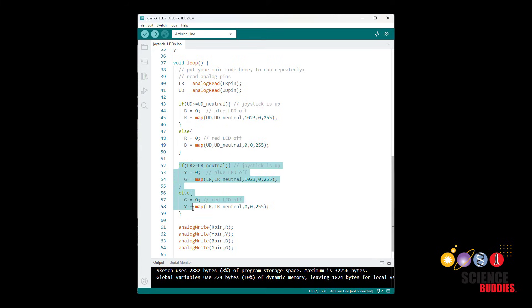I then do the same thing with a separate if else statement for the left right joystick value where I am controlling the yellow and green LEDs. The result is then that I have four analog write commands one for the brightness of each LED and as you saw as I push the joystick or rotate it around the brightness of the LEDs will change.